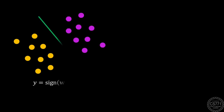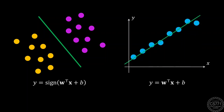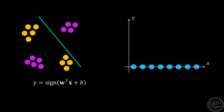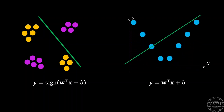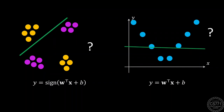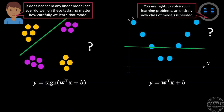In previous discussions, we studied several techniques to solve classification and regression problems using linear models. However, real-life applications often present tasks that a linear model may not be able to solve properly. Given here are two toy examples, one for binary classification and one for regression, where no matter how carefully we learn a linear model, it will never be able to give satisfactory performance. To solve such problems, we need to look at an entirely new class of models known as non-linear models.